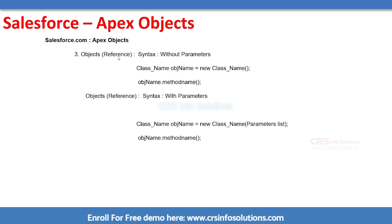An object is a reference for a class, or an entity of a class. To write an object without parameters, you write the class name, then specify the object name, then an equals sign, the new keyword, the class name again, with open and close brackets, terminated with a semicolon. To call a method you use the created object name along with the method name. To call with parameters, you pass the parameter list inside the brackets. Let's see a small demo of how to use Apex objects.